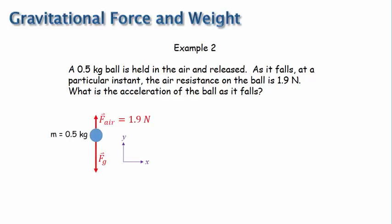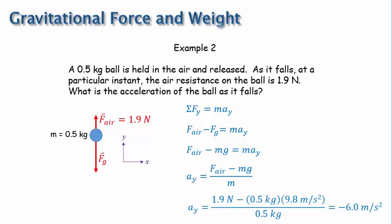Again, we apply Newton's second law in the y direction. And now we have two forces on the left side of the equation. The air resistance force pointing up and the gravitational force pointing down. We can again replace the gravitational force with mg and then solve the equation for acceleration. Finally, plugging in values, we get the answer negative 6 meters per second squared.